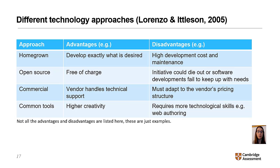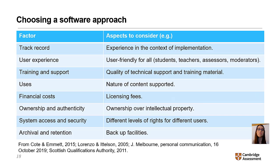This table adapted from Lorenzo and Itelson shows different possible technological approaches and some examples of the advantages and disadvantages of each — for example, homegrown, open source, commercial or common tools. And this further table adapted from several sources provides different factors to take into consideration when choosing an approach to ePortfolio software — for example, you would need to consider the user experience, financial costs, and system access and security, amongst others.